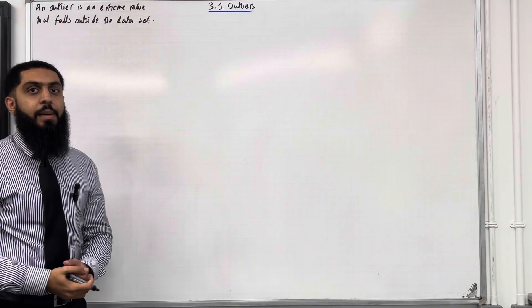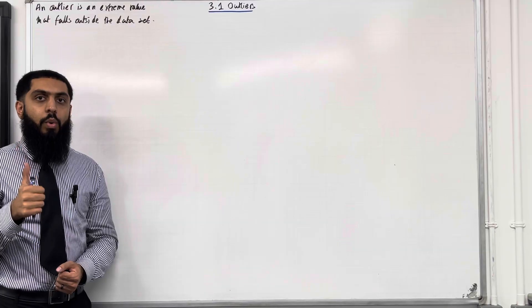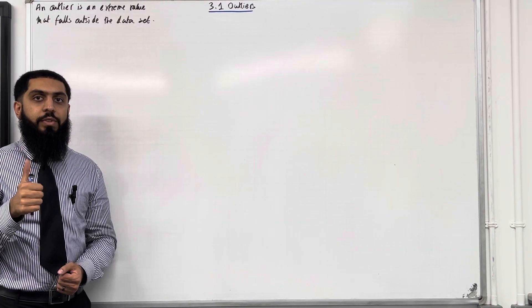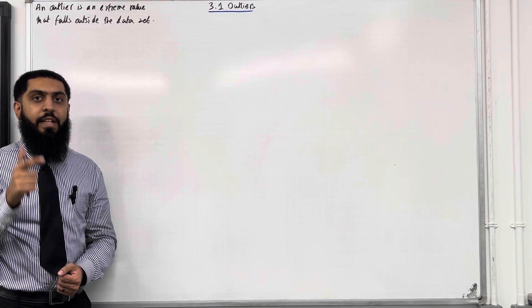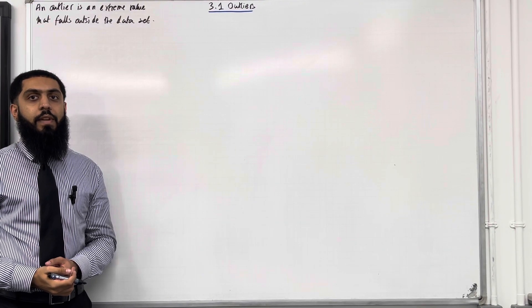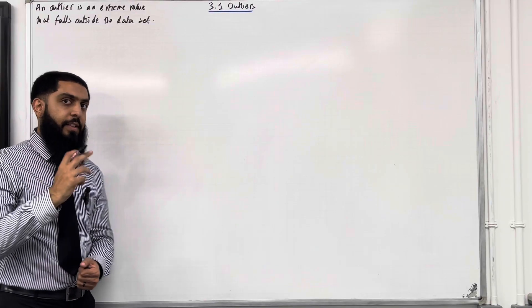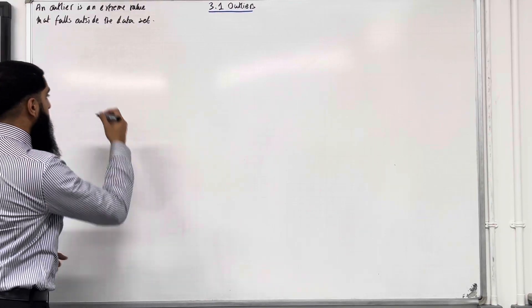There are two different types of tests for outliers. The first one is called the quartiles test for outliers and the second one is called the mean and standard deviation test for outliers. Let's have a look at the first one.